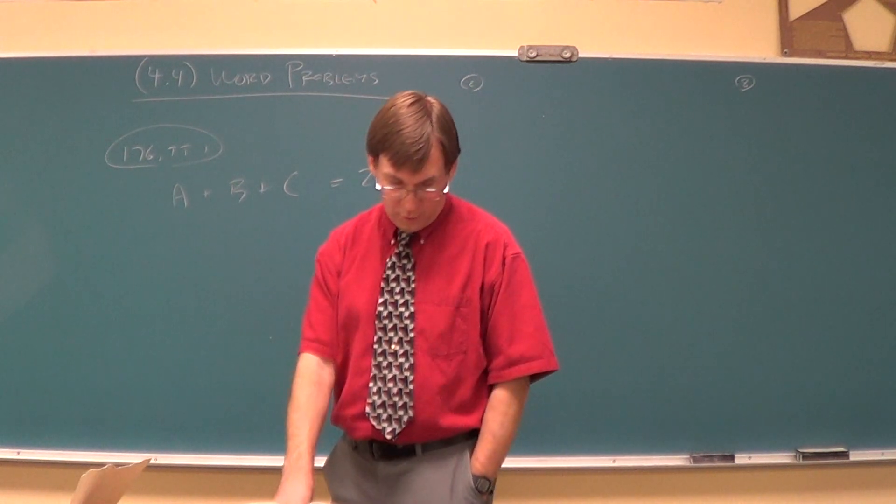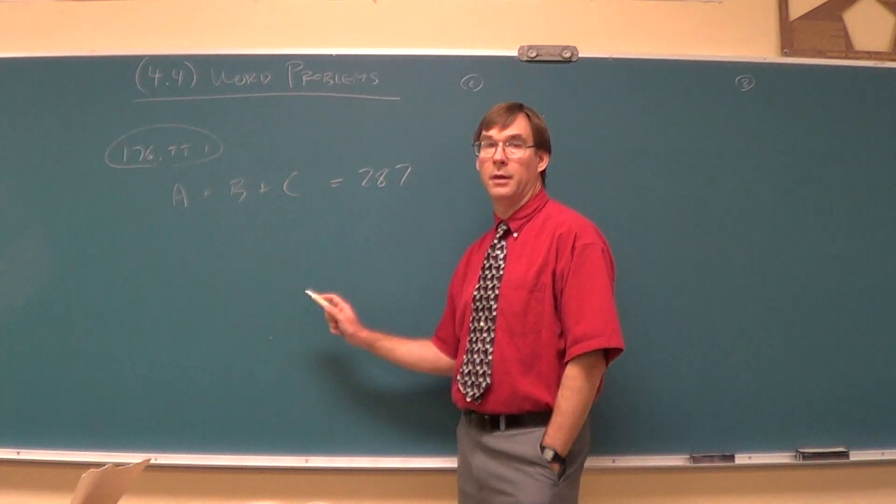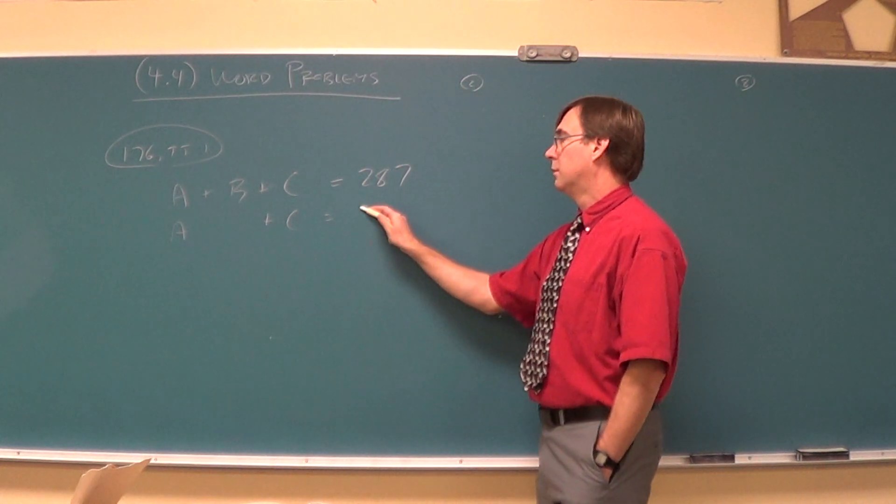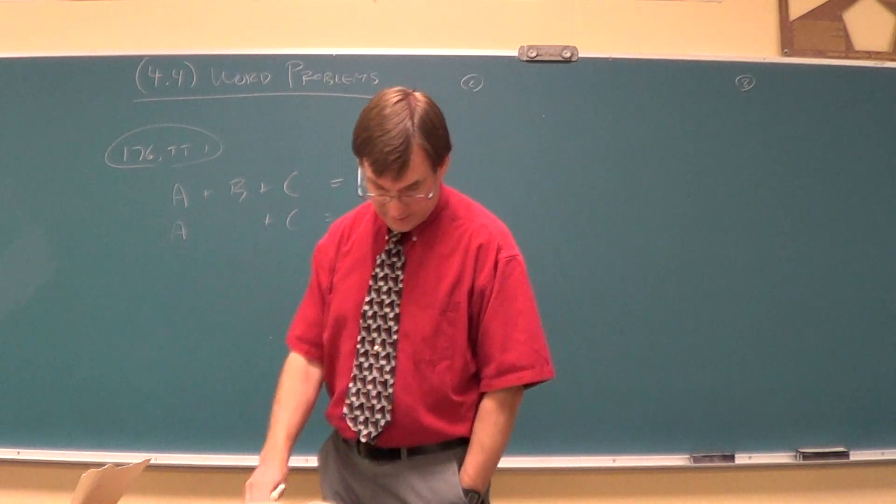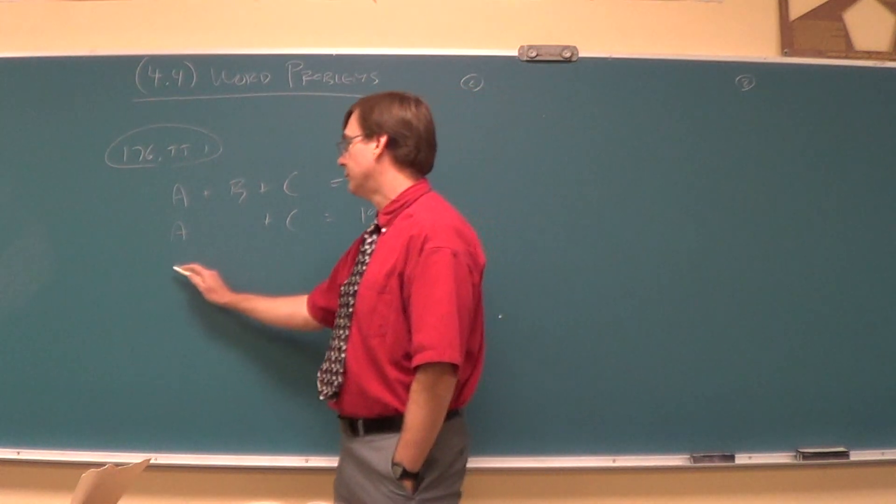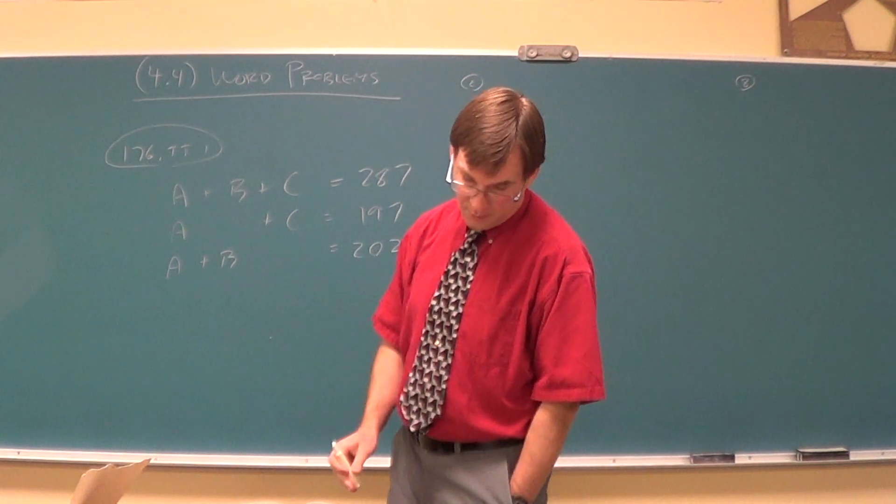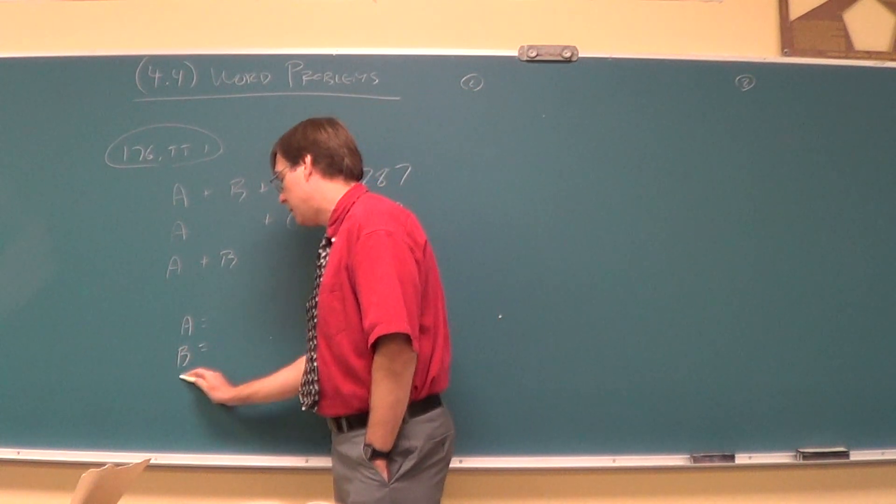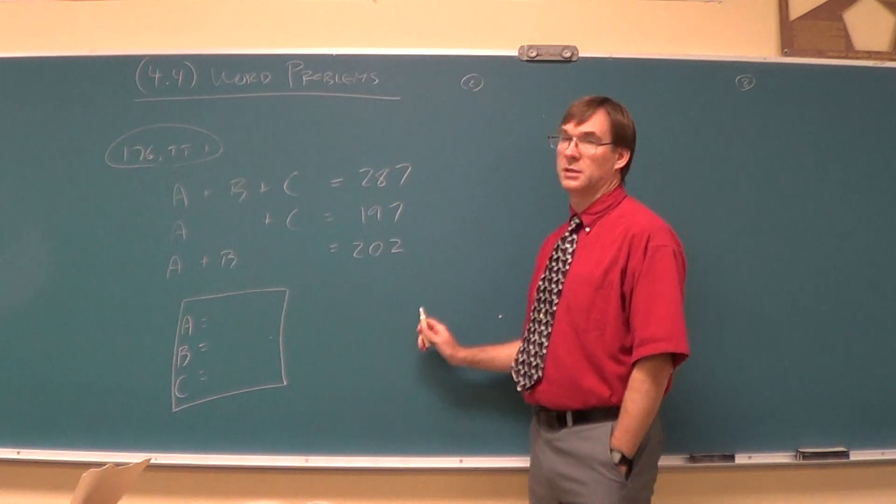A plus C equals 197. Then the last couple sentences say when A and B work, we get 202. So A plus B equals 202. And they want to know how many volts can each one produce. We're going to need just about that much space to get this figured out.